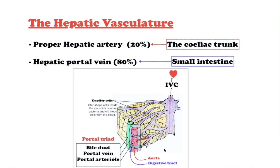The liver has a unique dual blood supply. The proper hepatic artery, contributing 20%, supplies the non-parenchymal structures of the liver with arterial blood and is derived from the celiac trunk. The hepatic portal vein, contributing 80%, supplies the liver with partially deoxygenated blood carrying nutrients absorbed from the small intestine. This is the dominant blood supply to the liver parenchyma and allows the liver to perform its gut-related functions such as detoxification.